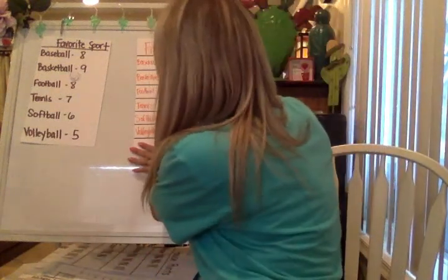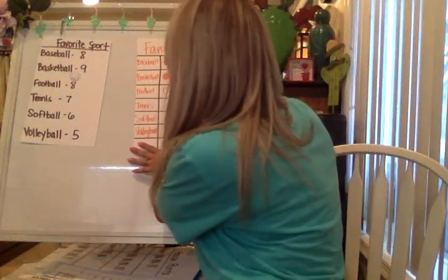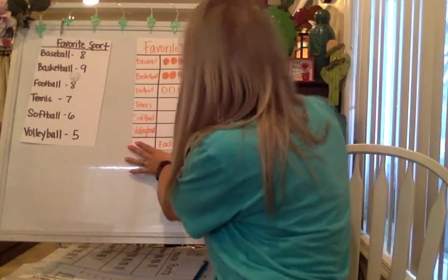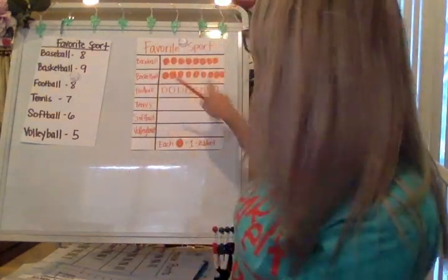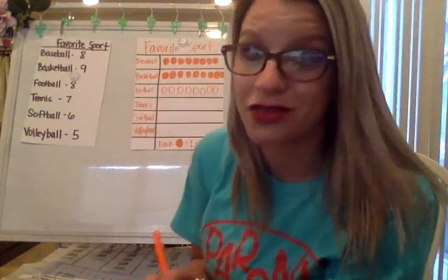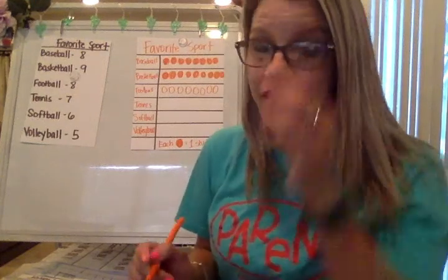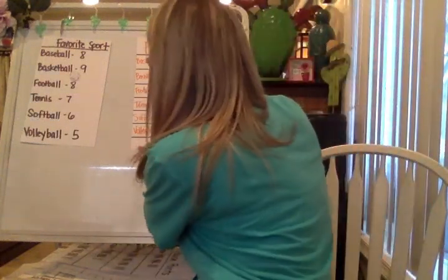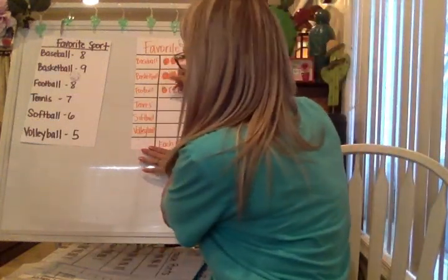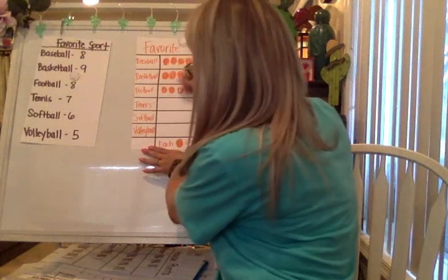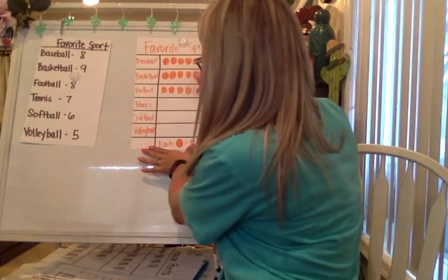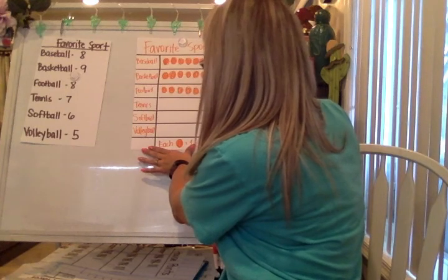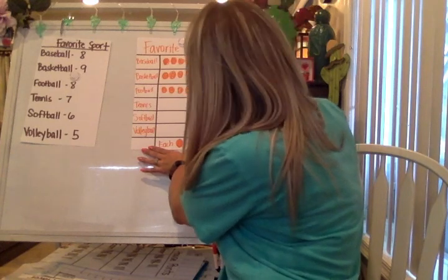Next I have football: 1, 2, 3, 4, 5, 6, 7, 8. Remember, it has to look like it's smaller than basketball, so be very careful when drawing your pictures for your picture graph. Go back and color them all in: 3, 4, 5, 6, 7, 8.